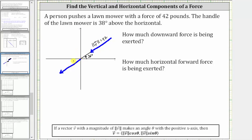Again, we know the magnitude of the vector is 42. Now, the direction of the vector is not 38 degrees. Remember, the direction of a vector is measured from the positive x-axis. And therefore, this angle here is the direction, which we often call angle theta, which is 180 degrees plus 38 degrees, or 218 degrees. So the direction of the vector, theta, is 218 degrees.